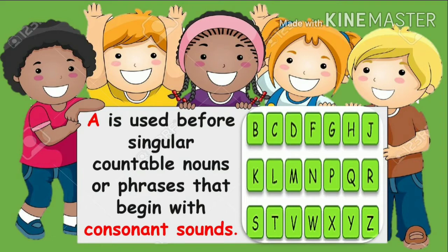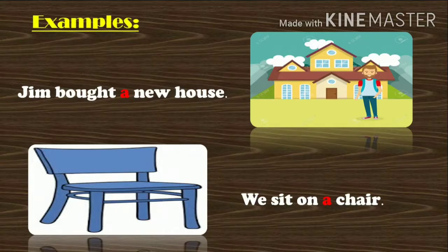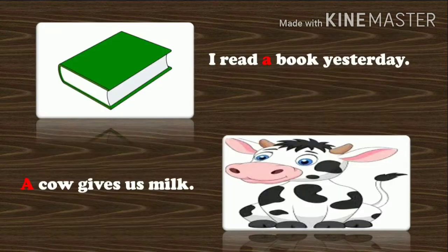Now let us read few examples using the article A. Jim bought a new house. We sit on a chair. I read a book yesterday. A cow gives us milk.